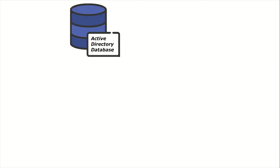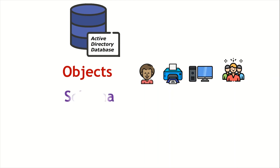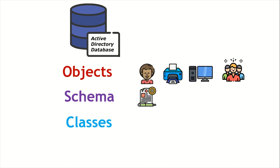This is our Active Directory database, which consists of objects. An object can be a user, a printer, a computer, or a group of users — everything is an object in Active Directory. Each object is derived out of schema, and schema contains classes, and these classes have their own attributes.